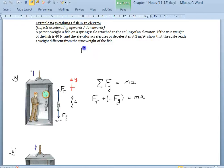I should also indicate the given. We are given in this case the weight of the fish, so F sub g equals 40 Newtons. This represents the true weight of the fish that would be in a system that is not accelerating. We're also given the acceleration in both cases is 2 meters per second squared.